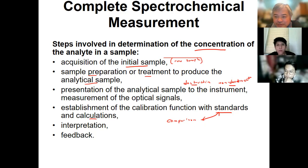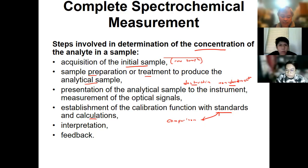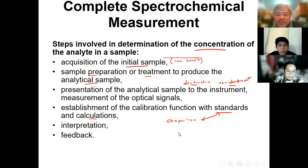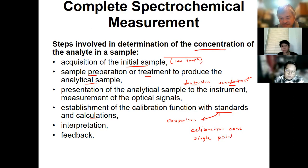Unless you've already established the chemistry — like you know the molar absorptivity — so once you get the absorbance you can get the concentration right away. But you seldom have that knowledge. So you have to use standards. The types of standards available include a calibration curve, single-point calibration, or what's called standard addition.